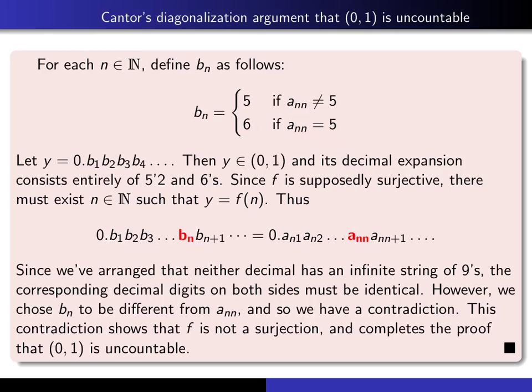Now, once we have the b's, we can create a decimal expansion out of it, and we'll call the resulting real number in (0,1), y. Now, the decimal expansion of y consists entirely of 5s and 6s. There aren't any 9s in it at all.